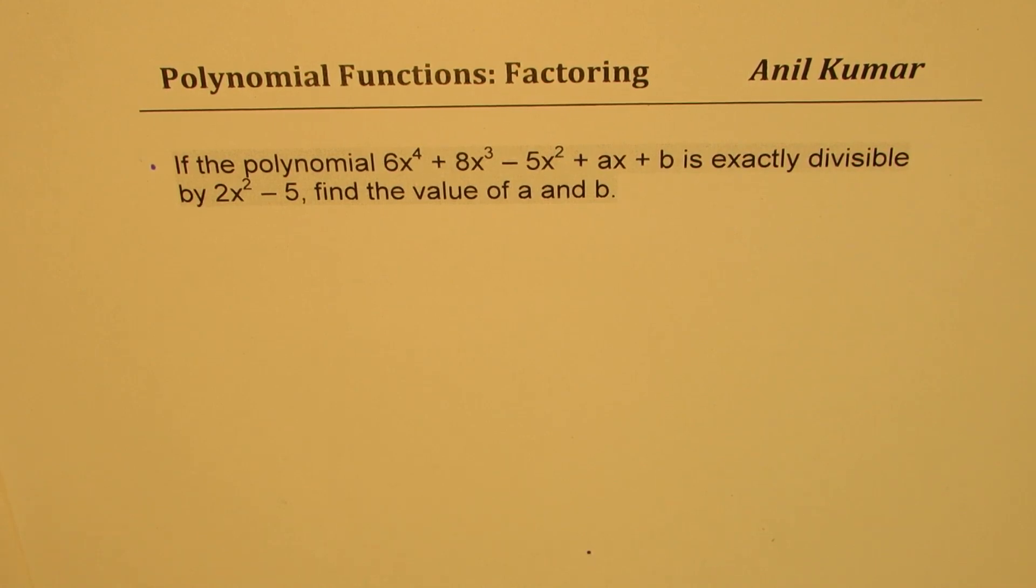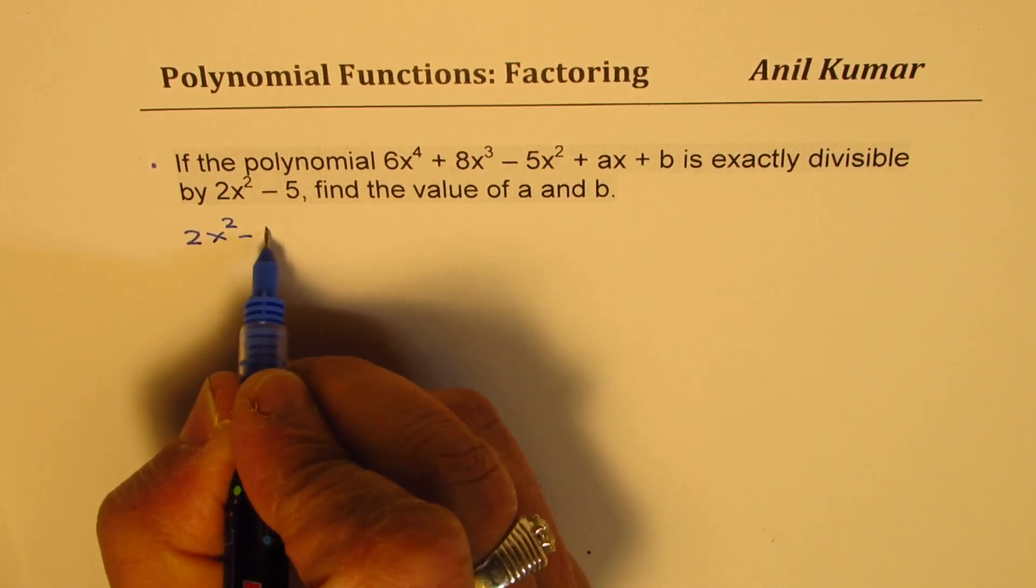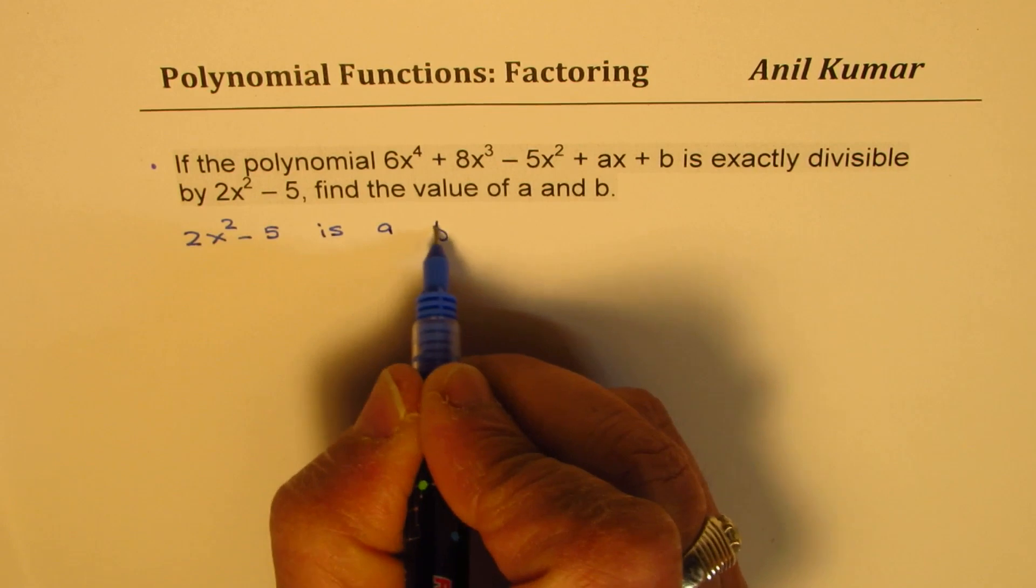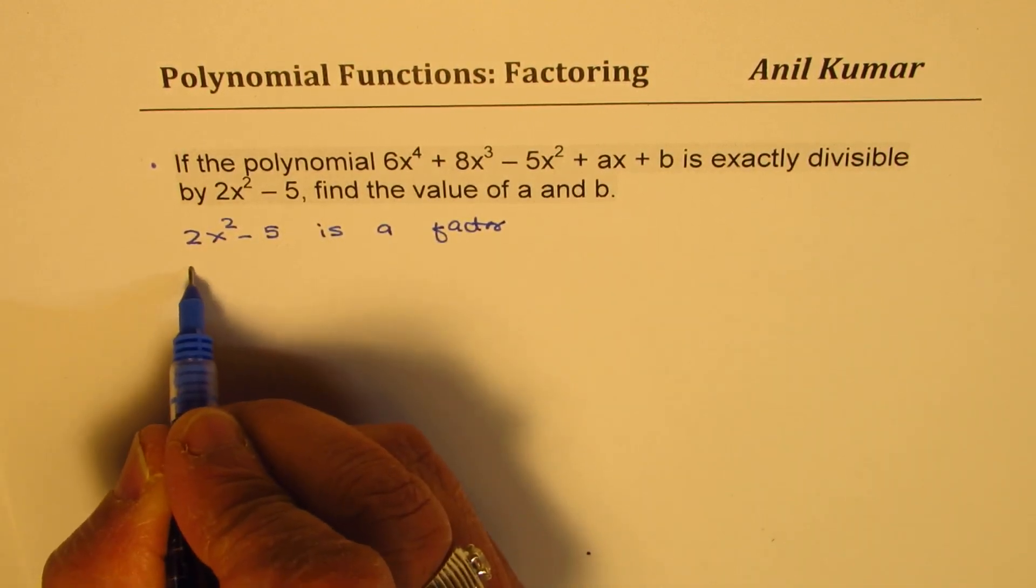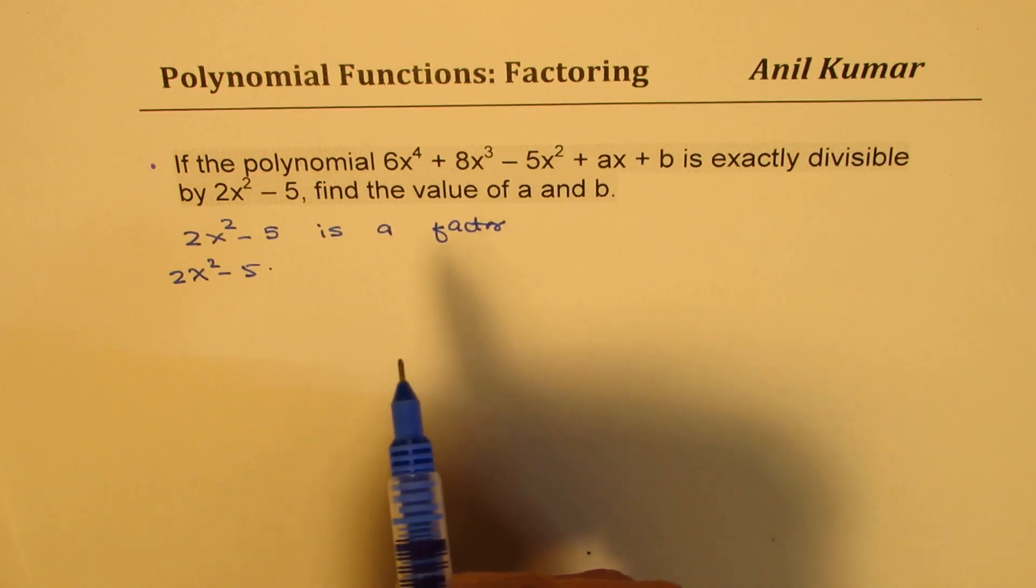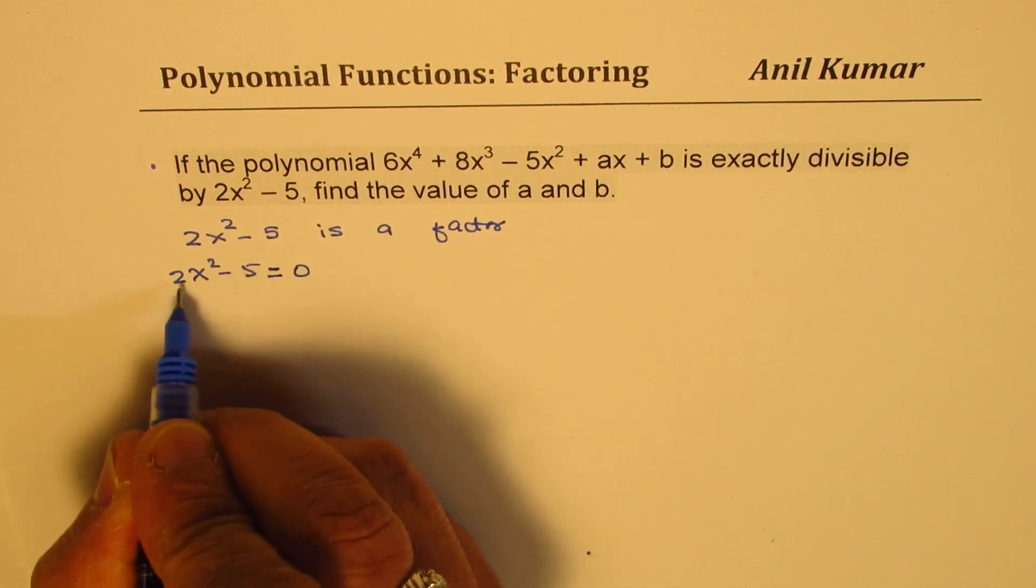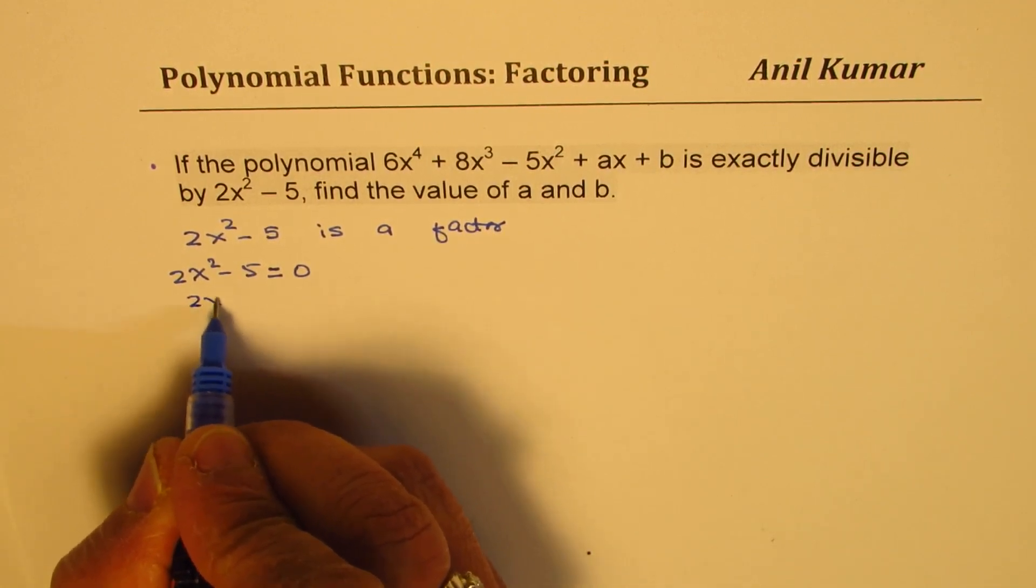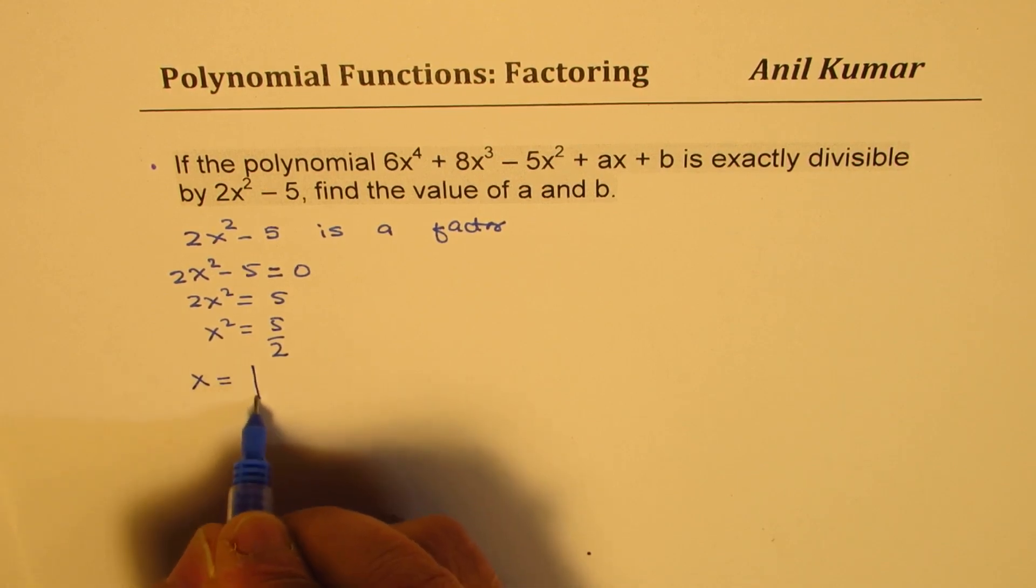Now, in this question, when we say exactly divisible by this, that means 2x squared minus 5 is a factor. If you solve it, 2x squared minus 5 is a factor really means that the x values for which you get the real roots will be equating this to 0, will give us 2x squared equals to 5 or x squared equals to 5 over 2 or x equals to square root of 5 over 2 plus and minus.